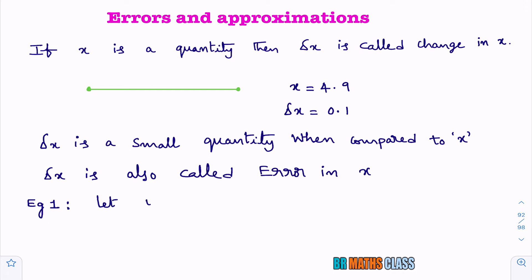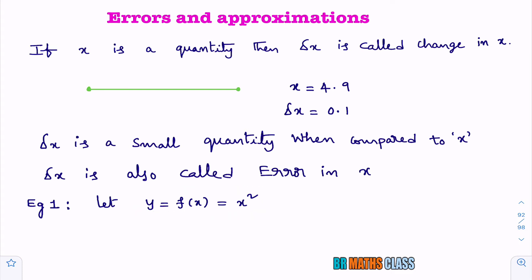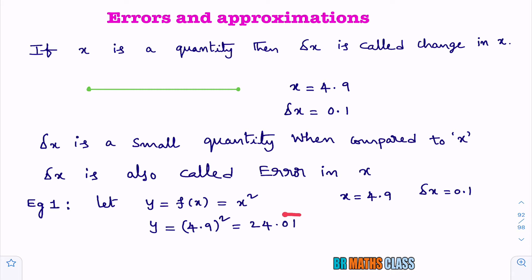Suppose a function y equal to f of x — for example, f of x as x squared. y equal to f of x means the value of y depends upon x. While calculating y, if any error occurs in x, then error occurs in y also. Suppose x is 5 centimeters, but while measuring, error occurred and x was measured as 4.9, so delta x is 0.1. If x is measured as 4.9, then y is 4.9 squared, which is 24.01. Error in y occurred because of error in x.